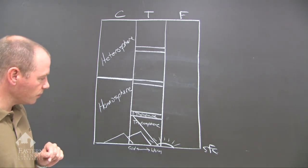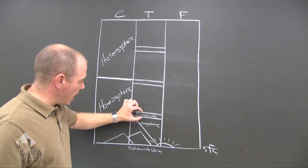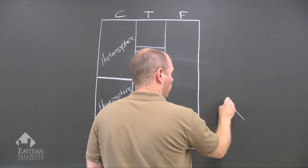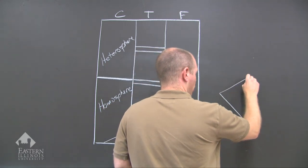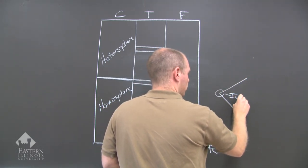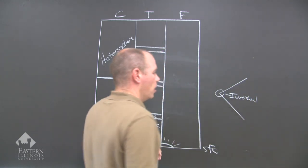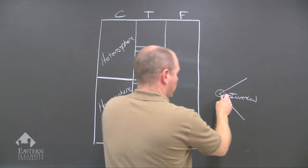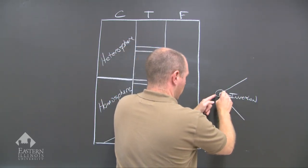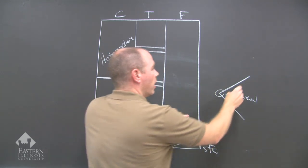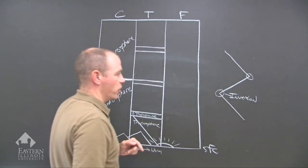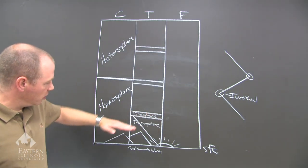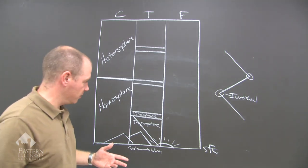The tropopause acts like a lid. There's a temperature inversion: you go one direction and then you shift — that's the inversion, the point where it changes direction. It could also go the other way: the temperature is warming up and then it shifts, so there's a temperature inversion there. That's what's happening with these pauses — there's a temperature inversion at the pause, and it acts like a lid.